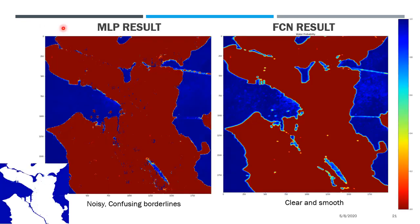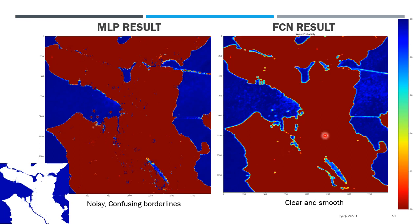In this slide we visually assess the performance of each neural network for water detection. These two heat maps are outputs of the neural networks, where blue color means high probability of water and red color means low probability. From the heat map we can see that the output of the multi-layer perceptron is very noisy and the border line is confusing. In contrast, the output of the fully convolutional network is very clear and smooth.